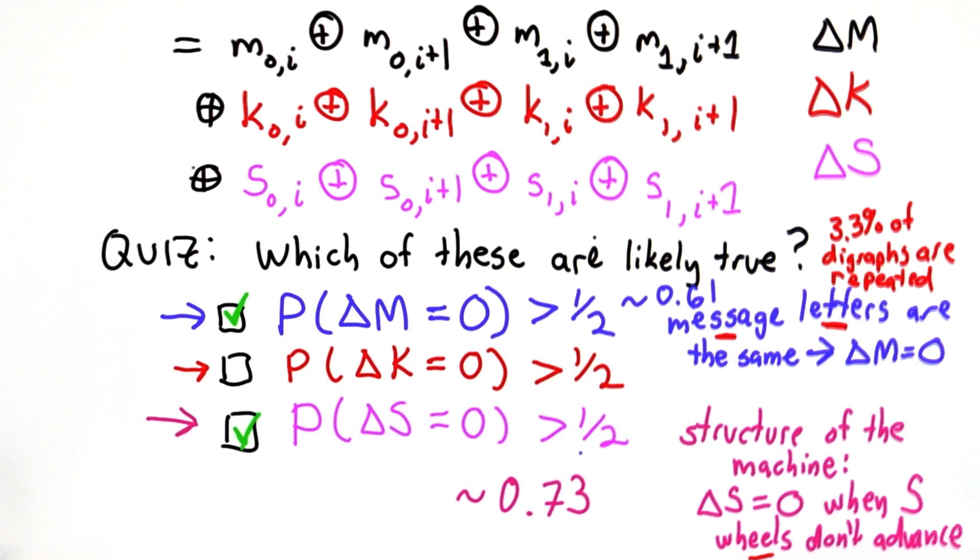Both of these are numbers that you didn't have enough information to guess on your own. You would need to have an analysis of German text to know that this is the probability here. And you would need a lot more details on the M wheels to be able to get that. So don't feel bad if you didn't get this quiz correctly.